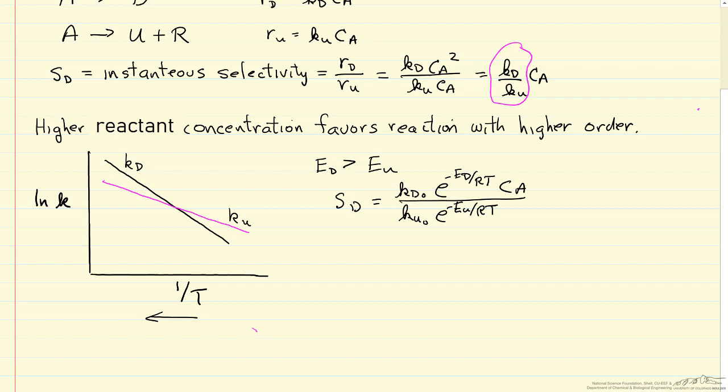Notice the absolute value of the slope—the plot is steeper for desired reaction because ED is larger than EU. So then we conclude that higher temperature favors the reaction with the higher activation energy.